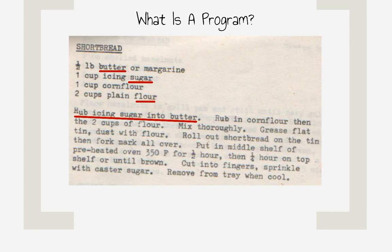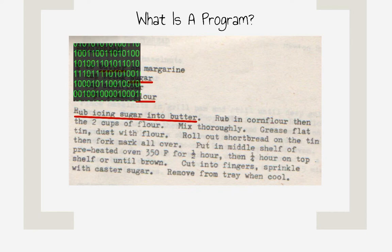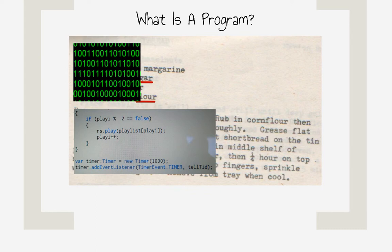In a computer program, the ingredients are pieces of information, or data. We call the instructions of a program code.